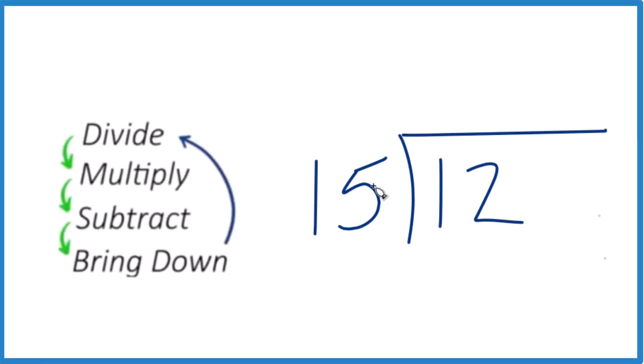So let's divide 12 by 15. So how many times does 15 go into 12? And we'll use this process here. So 15 won't go into 12, so we've got a bit of a problem here.